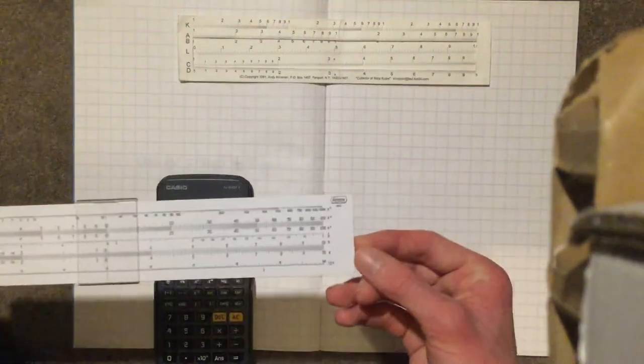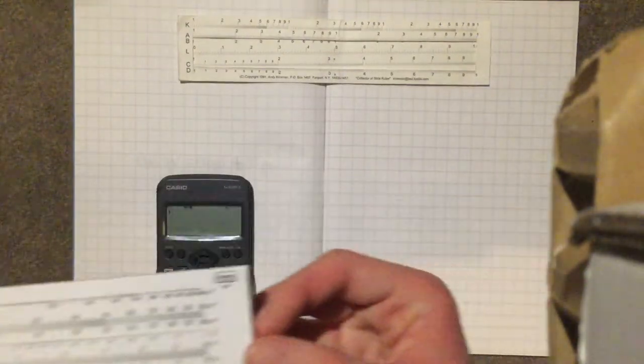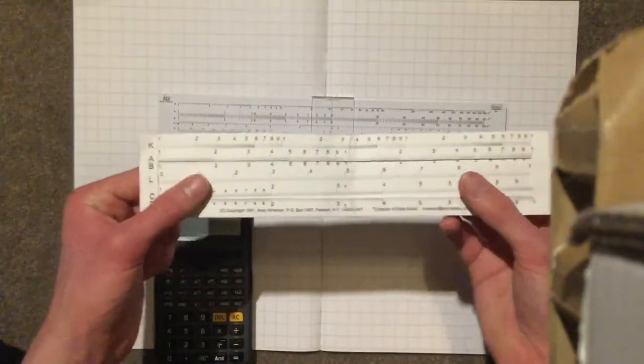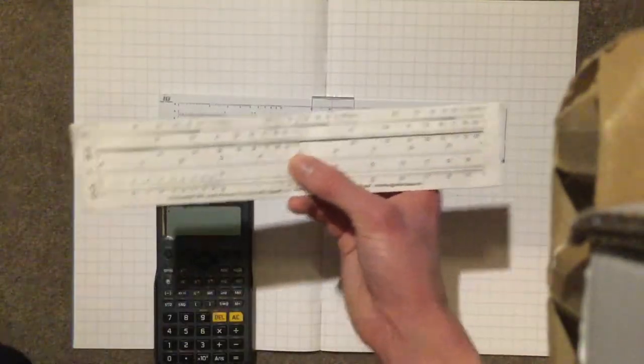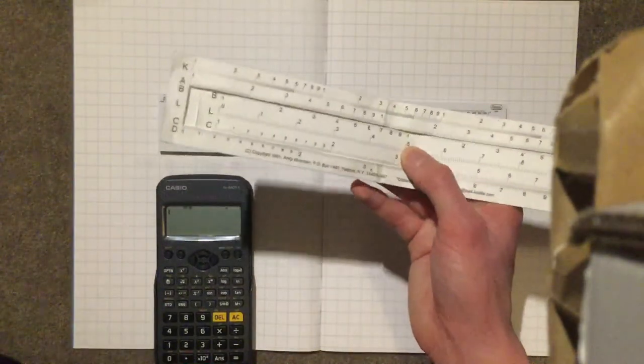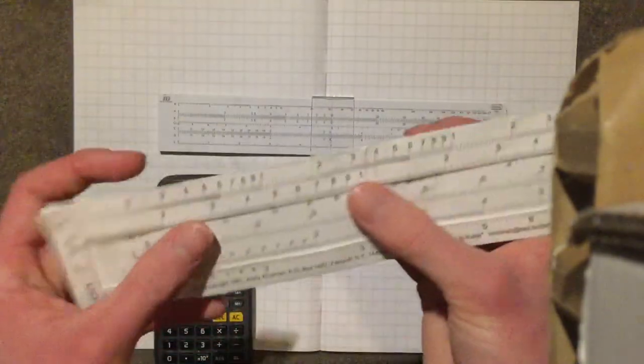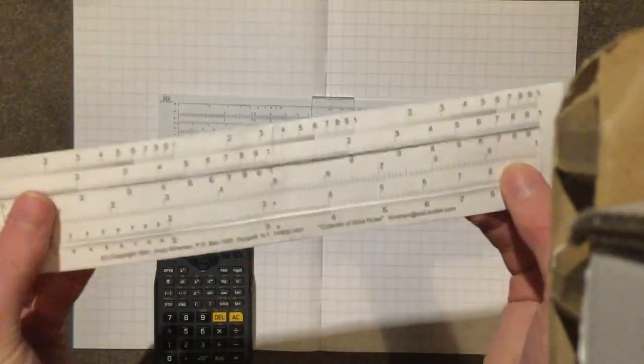Now while I do have a proper slide rule here, specifically an Academy 300 series, if you don't have a natural slide rule, you can print off paper ones on the internet and make these and they work great. I highly recommend doing it because it's a lot of fun and it means you can follow along with this, so I'll link this one in the description.